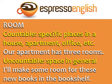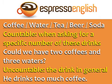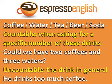'Room' is countable when talking about specific places in a house, apartment, or office: 'Our apartment has three rooms.' Room is uncountable when talking about space in general: 'I'll make some room for these new books in the bookshelf.' Coffee, water, tea, beer, and soda are countable when asking for a specific number of these drinks.